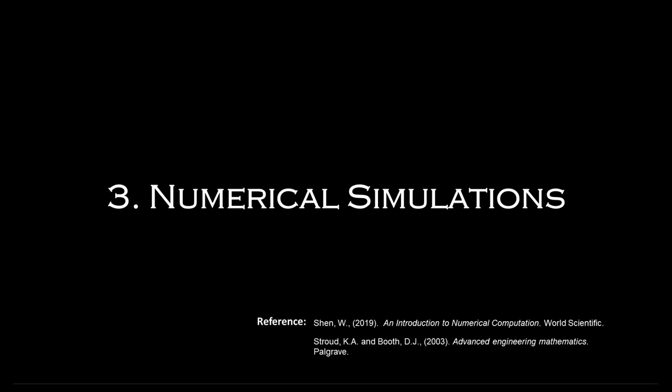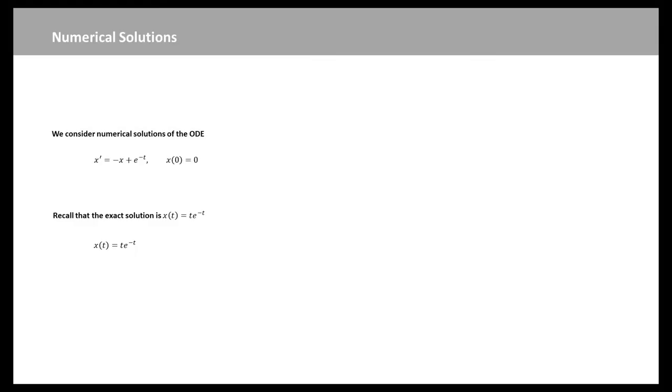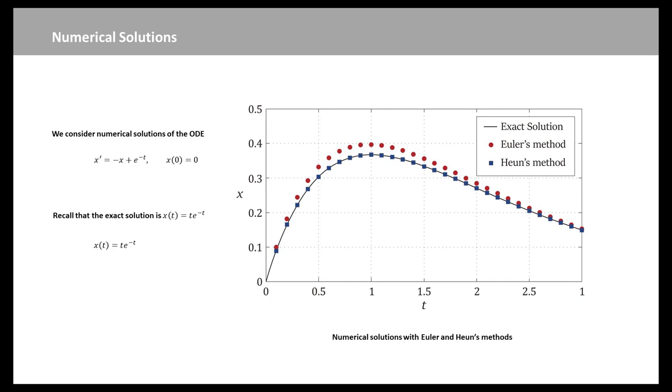Now, we will look at some numerical simulations for various Runge-Kutta methods. We will consider the same ordinary differential equation which is x' equals to negative x plus e to the negative t, where we know the exact solution which is x times e to the negative t. The next plot we are showing here is the simulation using Euler's method and Heun's method. The exact solution is plotted as the black curve. And the Euler's method is plotted as the red circles at the grid point. And the Heun's method is the rectangles here. It is quite clear that Heun's method performs much better.